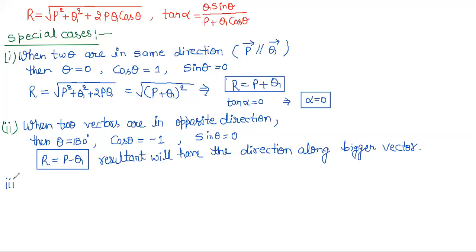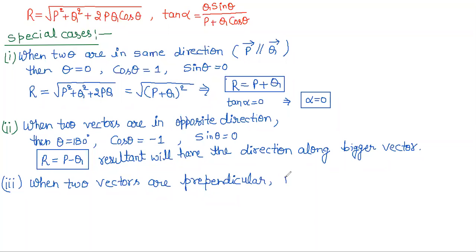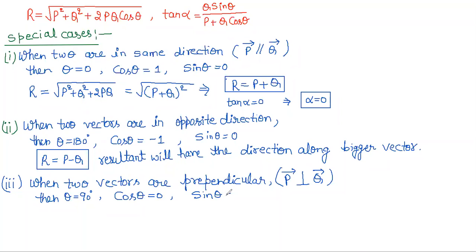Third point: when two vectors are perpendicular — that means vector P is perpendicular to vector Q — theta should be 90 degrees. Cos theta will be 0 and sin theta will be 1. So R will equal the square root of P squared plus Q squared, and tan alpha will be Q upon P.